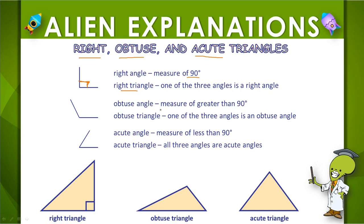An obtuse angle has a measure of greater than 90 degrees, greater than a right angle. When a triangle has an obtuse angle, it's called an obtuse triangle.